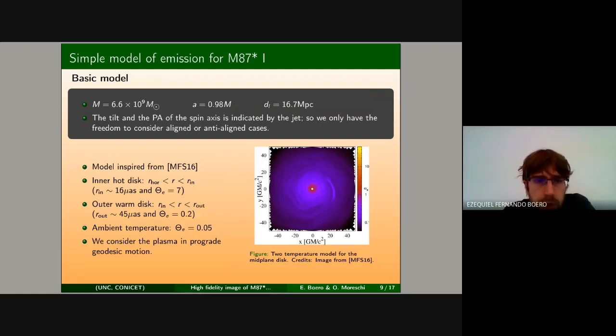Our basic model is described in this slide. For the black hole we are fixing some parameters to standard values for M87. We have a mass of about 10^9 solar masses and spin parameter equal to 0.98 in units of the mass of the black hole. The peak position angle of the spin of the black hole is mainly guided by the presence of the large-scale jet and the observer.